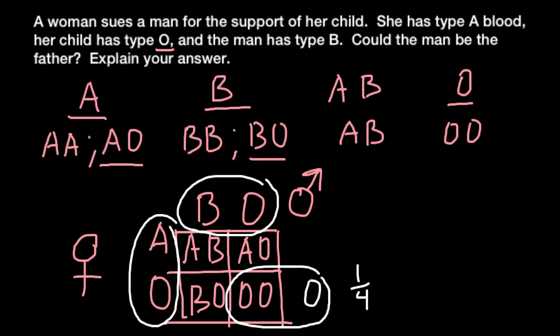So our answer would be yes. These two people may have a child who belongs to the blood group O.